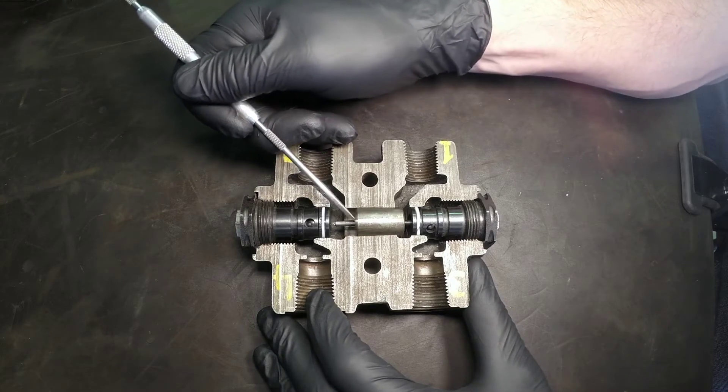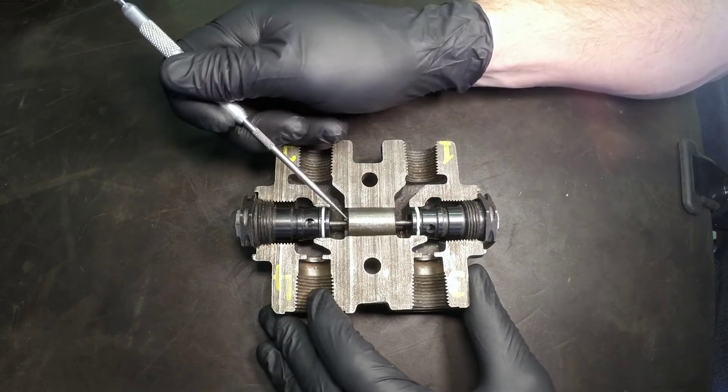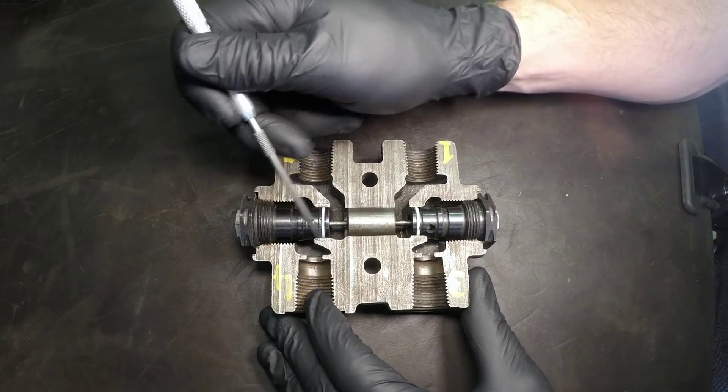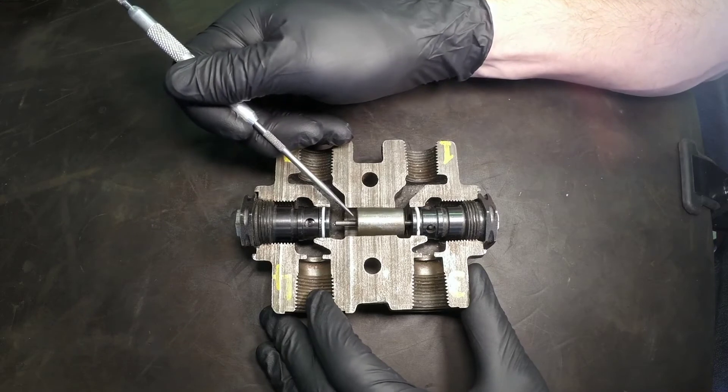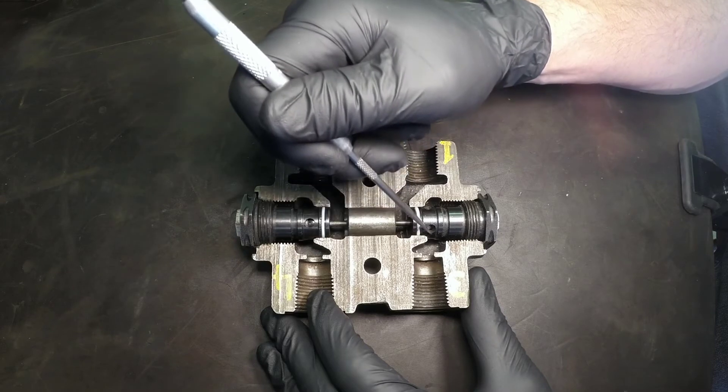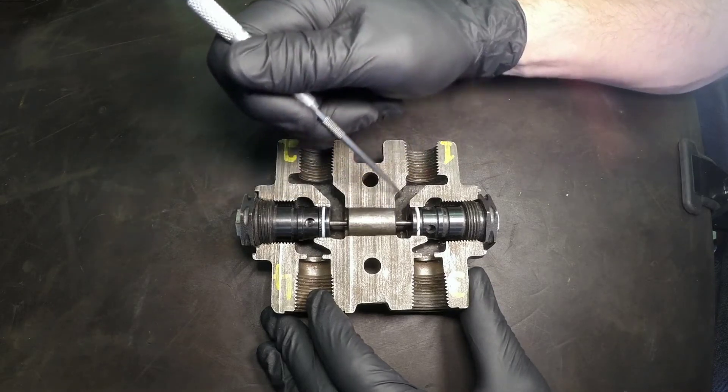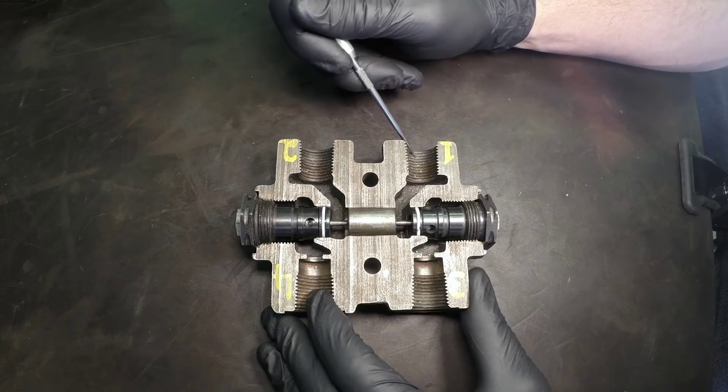And what happens when this poppet moves over, because the pressure is going to be equal on this side as well as this side to open the check valve, what happens is as we're sending the oil to the rod end, we are opening the passageway for the base end of the cylinder to be able to get past this check ball back into work port B.